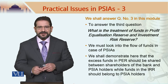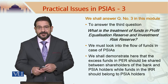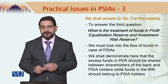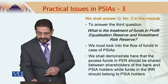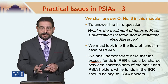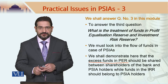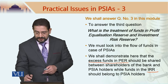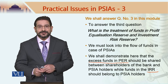More specifically, the question asks: who owns the funds in these two reserves? We shall demonstrate in this module that the excess funds in PER (profit equalization reserve) should be shared between the shareholders of the bank and the profit-sharing investment account holders, and the funds in IRR (investment risk reserve) should belong to the profit-sharing investment account holders exclusively.